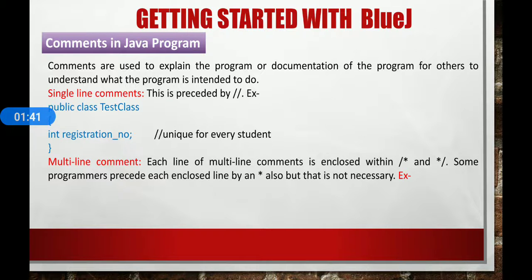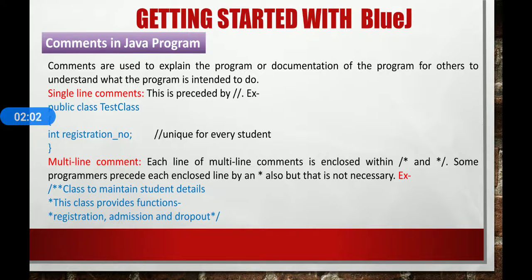Next is the multi-line comment. Each line of a multi-line comment is enclosed within slash, asterisk, and asterisk slash. Some programs precede each included line by an asterisk, but that is not necessary. Let's see the example. Here, all three lines are treated as comments. This is part of the program, but not treated as executable part of the program.